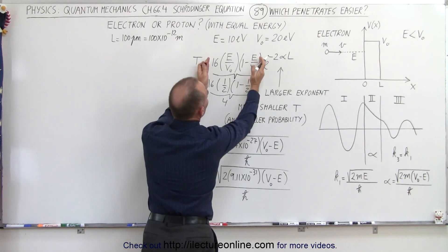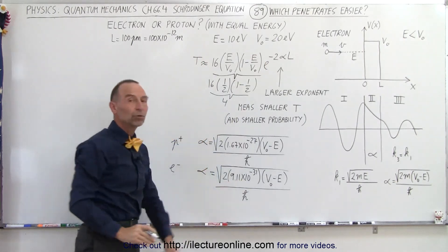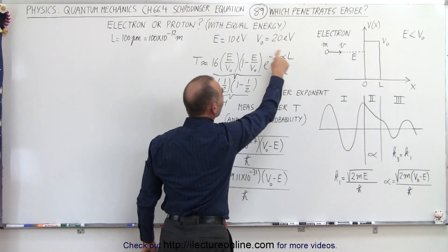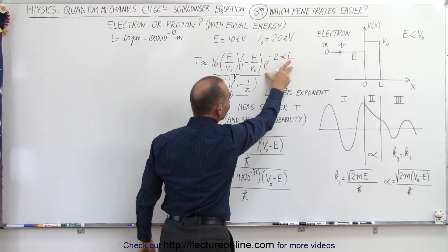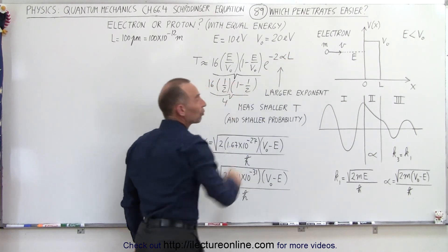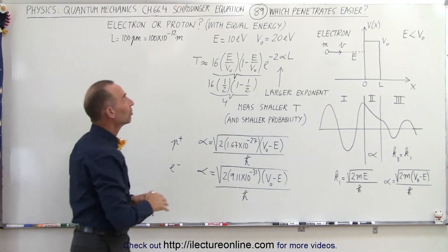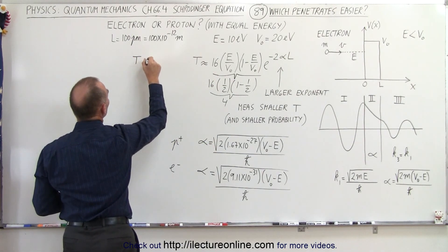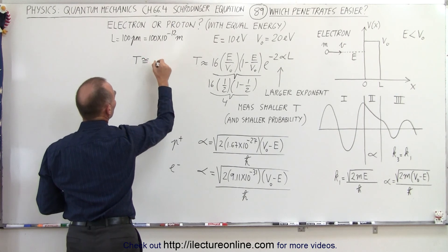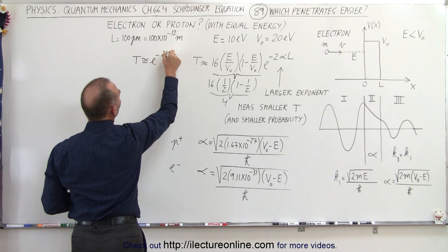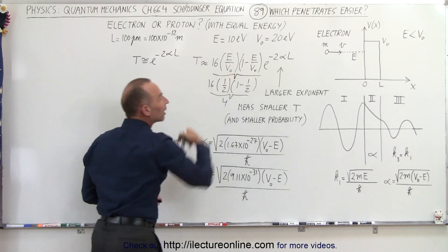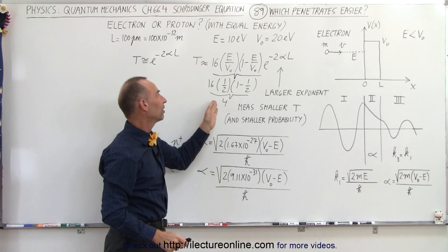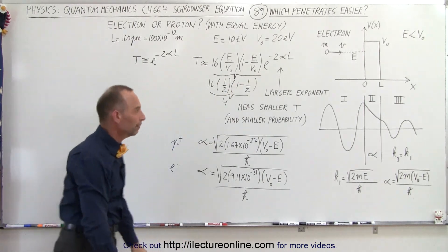This portion of the equation is simply a constant equal to 4. If the exponential term is a very small number, then of course the factor of 4 doesn't even matter. We can simply say that in the simplified version T would be approximately equal to e to the minus 2 alpha L, and we can forget about the constant factor in front as it's insignificant compared to the exponential.